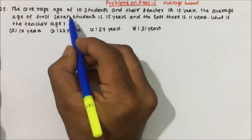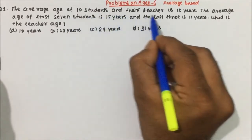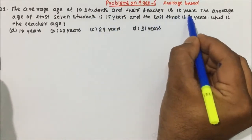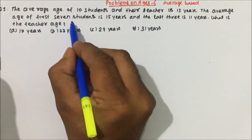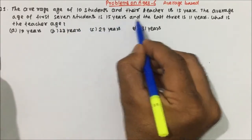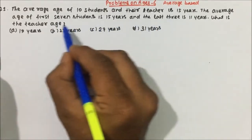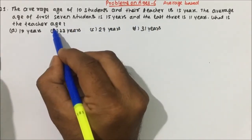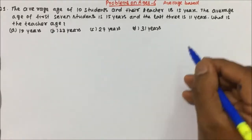So let's understand the question: The average age of 10 students and their teacher is 15 years. The average age of the first 7 students is 15 years and the last 3 is 11 years. What is the teacher's age?